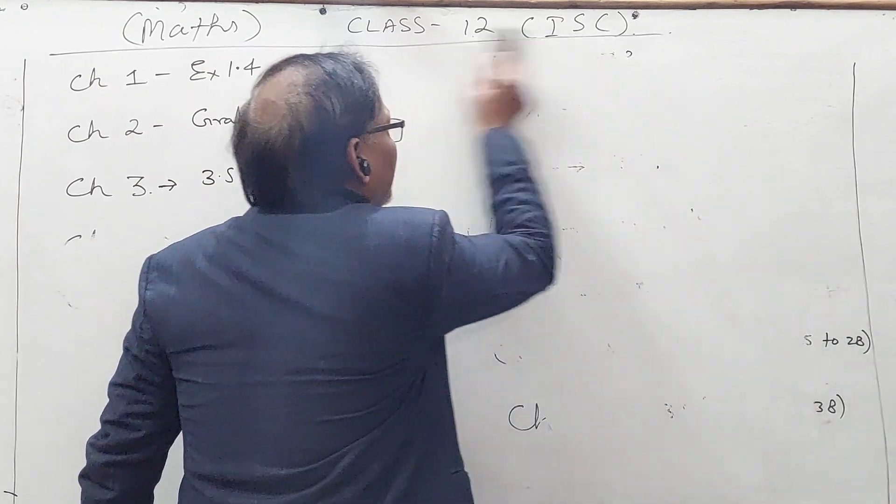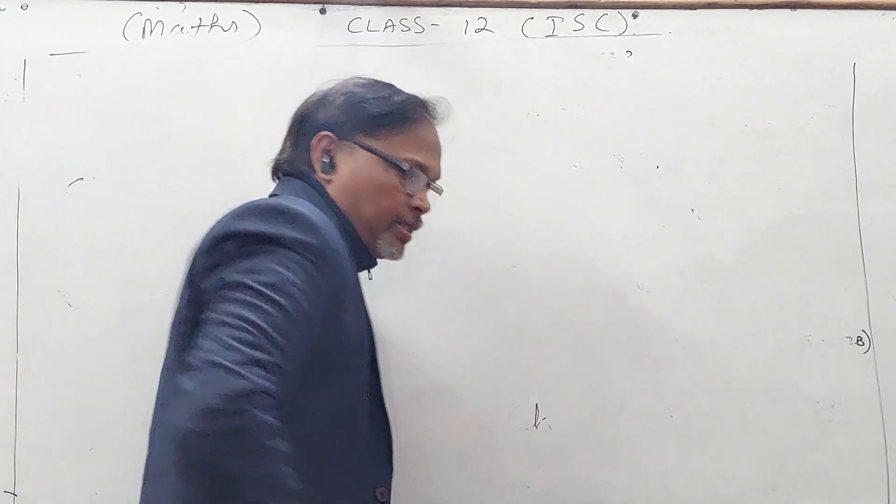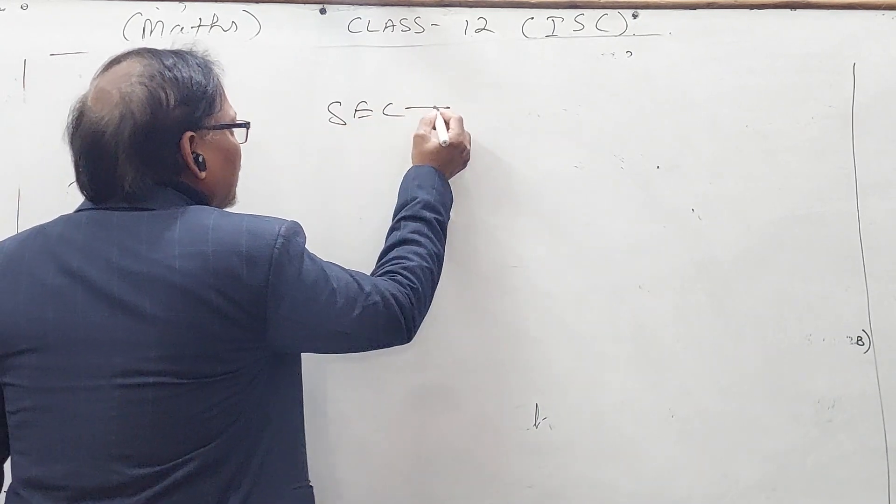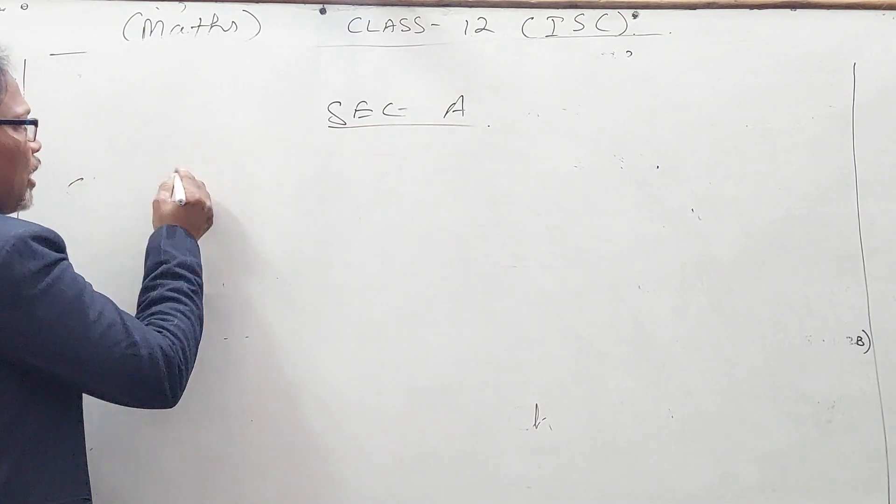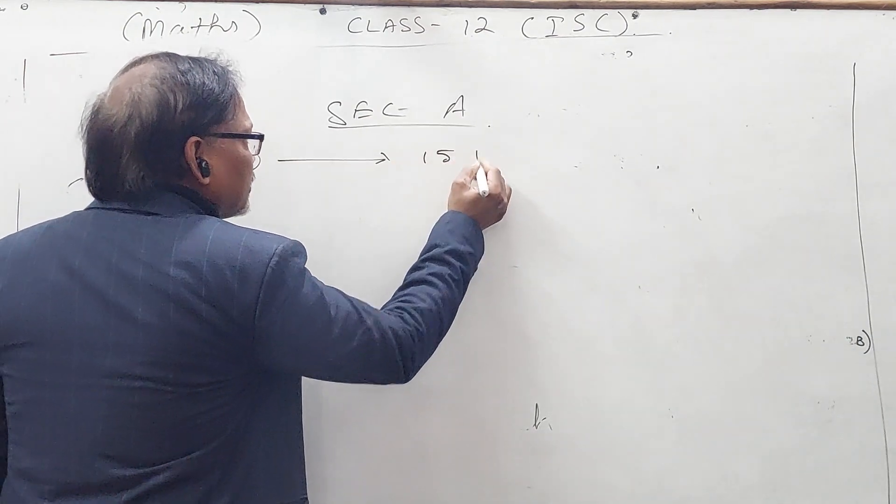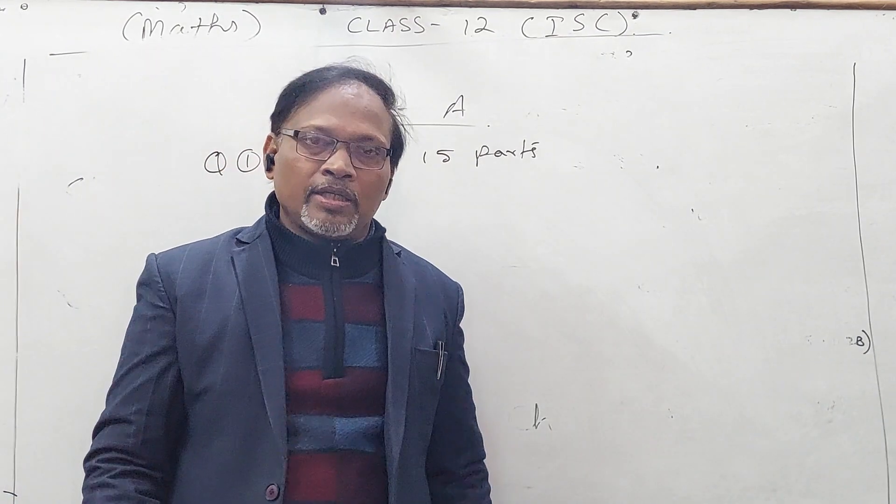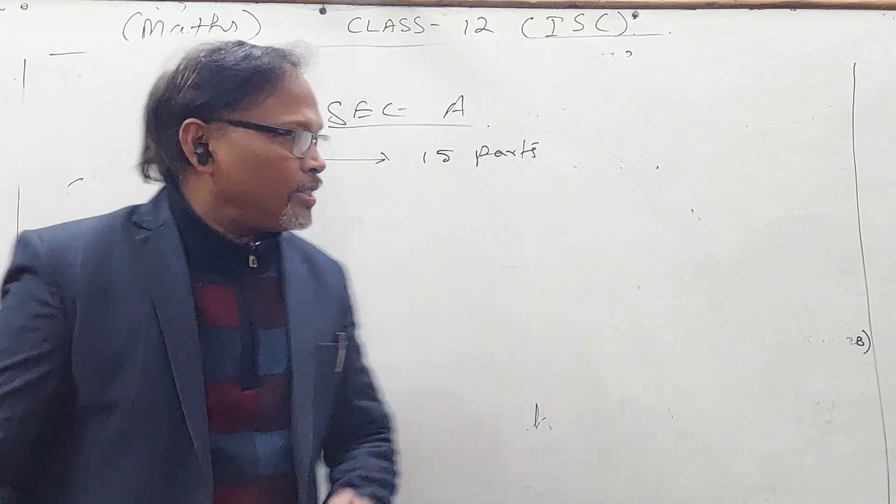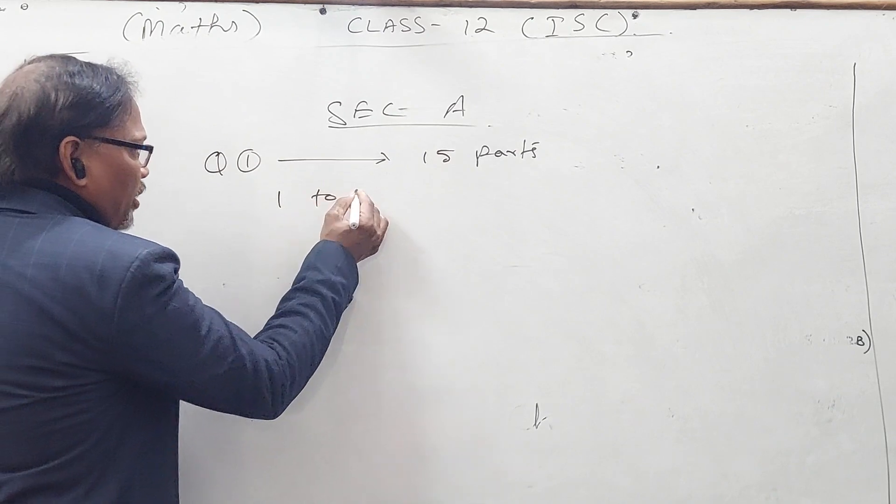Now I'll tell you the pattern. In Section A, as you know there are three sections, but Section A is compulsory for all. There will be Question 1 having 15 parts. These 15 parts are 1 mark each. Parts 1 to 10 will be MCQ type, so you only have to write the option.